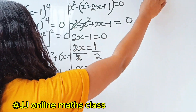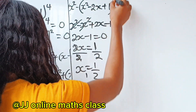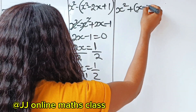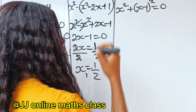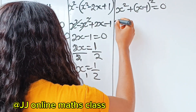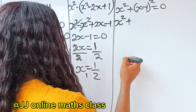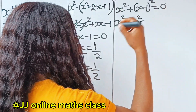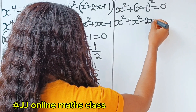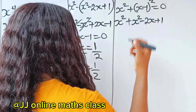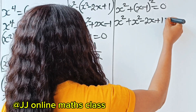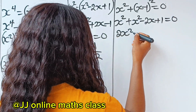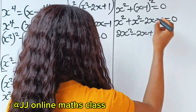Now for Case 2: x squared plus x minus 1 squared equals 0. Opening the bracket, x minus 1 squared expands to x squared minus 2 times x times 1 plus 1 squared, which is x squared minus 2x plus 1. So we have x squared plus x squared minus 2x plus 1 equals 0, giving us 2x squared minus 2x plus 1 equals 0.